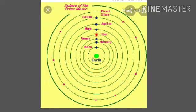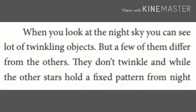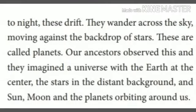When you look at the night sky, you can see a lot of twinkling objects. But a few of them differ from the others — they don't twinkle, and while the other stars hold a fixed pattern from night to night, these drift. They wander across the sky, moving against the backdrop of stars. These are called planets. Our ancestors observed this and they imagined a universe with the earth at the center, the stars in the distant background, and the sun, moon and the planets orbiting around us.